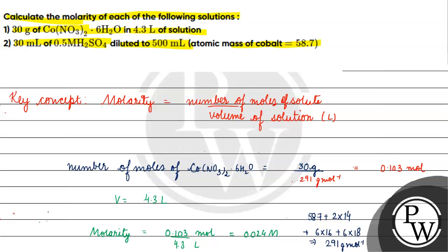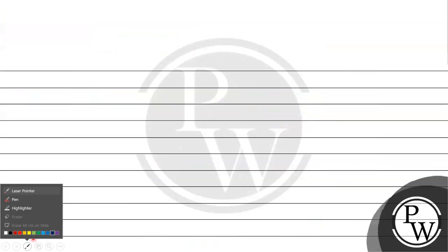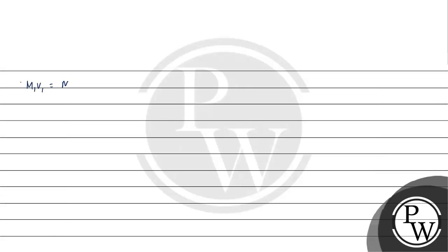Next, we need to find the molarity when we have 30 ml of 0.5 molar H2SO4 diluted to 500 ml. We will use the formula M1V1 equals M2V2.